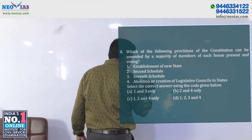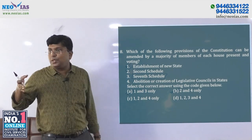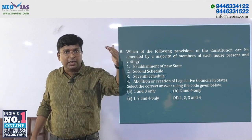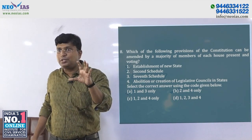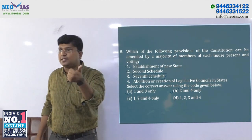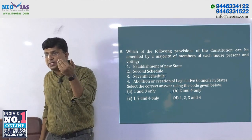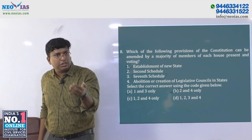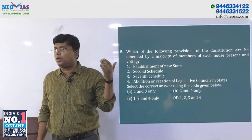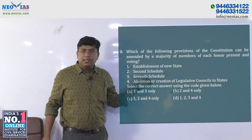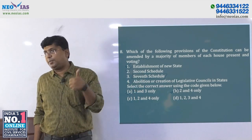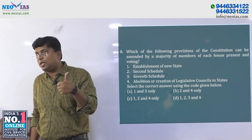The Seventh Schedule deals with the division of powers between the Union and states. If you want to make any changes to it, it affects the federal system. So simple majority will not work — in order to amend the Seventh Schedule, you require a constitutional amendment under Article 368, meaning special majority is required.